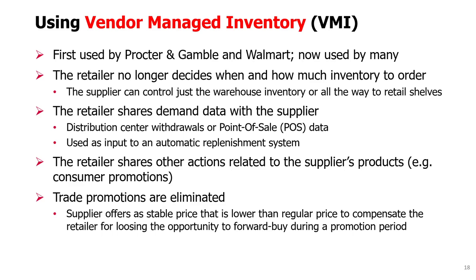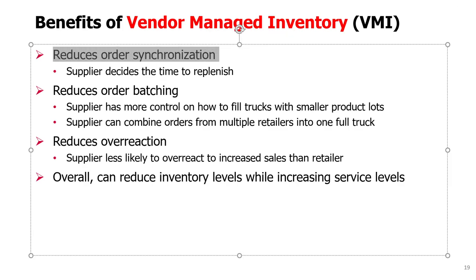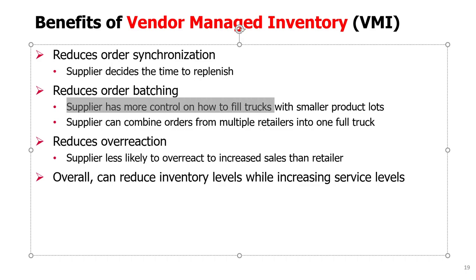However, a supplier can offer a stable low price when someone agrees to manage inventory in that way, compensating the retailer for losing the opportunity to forward buy during a promotion period. VMI reduces order synchronization because the supplier decides the time to replenish. It also reduces order batching because the supplier has more control over how to fill trucks with smaller product lots — for example, combining two products into one half-and-half pallet to reduce quantities and deliver more frequently.